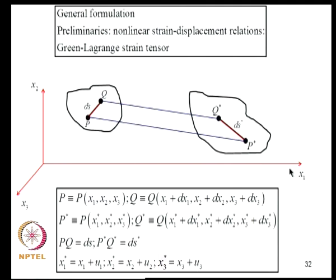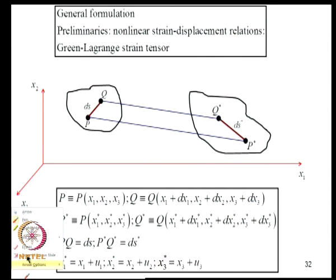We focus on a line element PQ in the undeformed configuration, which occupies position P*Q* in the deformed configuration with lengths DS and DS* respectively. Point P has coordinates (X1, X2, X3) and Q has (X1+dX1, X2+dX2, X3+dX3). The displacement field is defined by Xi* = Xi + Ui, so X1* = X1 + U1, X2* = X2 + U2, X3* = X3 + U3.